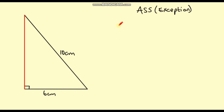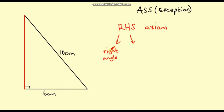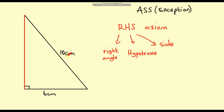You might also hear it referred to as the RHS axiom. R stands for the right angle, H stands for the hypotenuse, and S stands for another side length. It doesn't matter which side we've got — as long as we've got a side, the hypotenuse of our right angle triangle, and a right angle, then we know that the two triangles will be congruent.